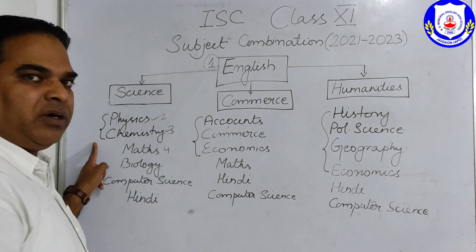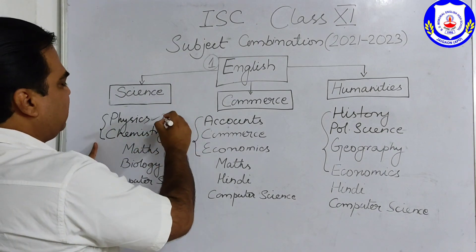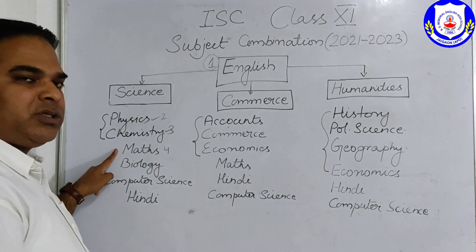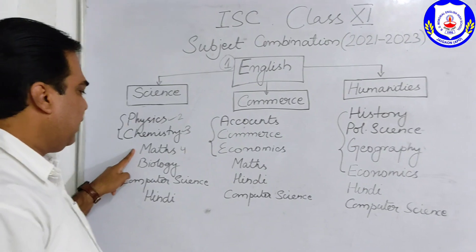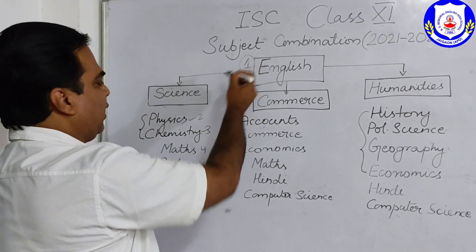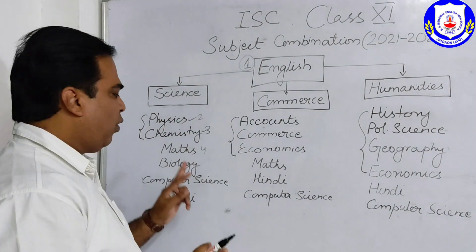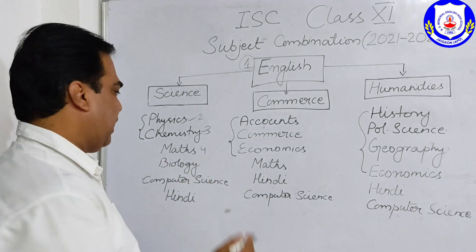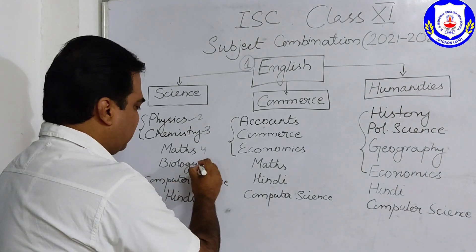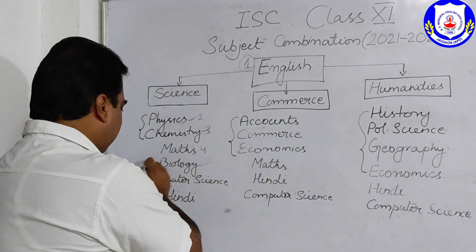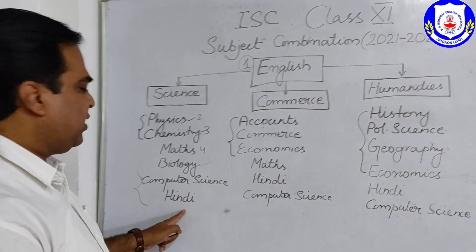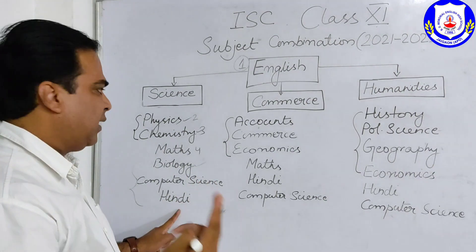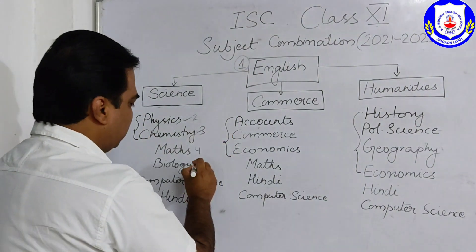Now discussing the Science stream: Physics is compulsory, Chemistry is compulsory — you have to take them. Then you can definitely go for Maths as well. So that is already four subjects chosen. You can also go for Biology — if you choose Biology, well and good. If not, out of the remaining optional subjects you can choose either one or two.